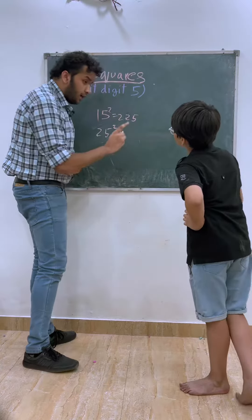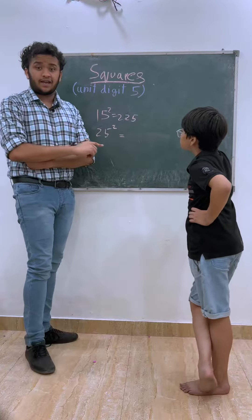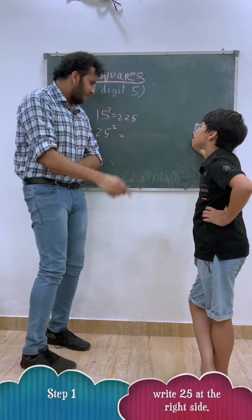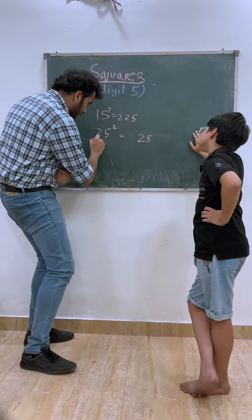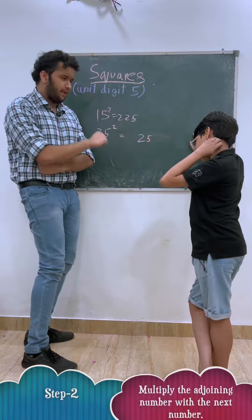Let's do it. Do you know, if you ever have any number of square which is 5, then what do you do? The last one is 25. And whatever the first number is, do the next number. Multiply.